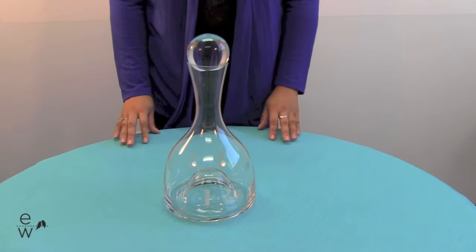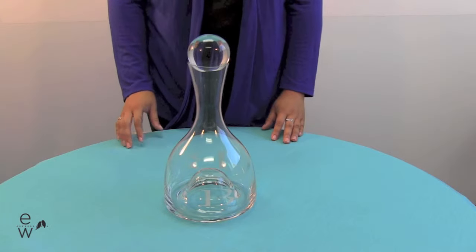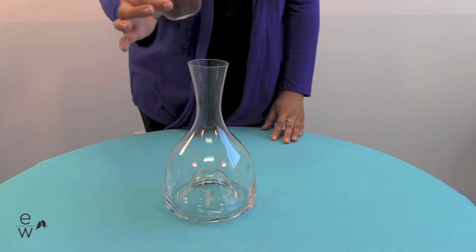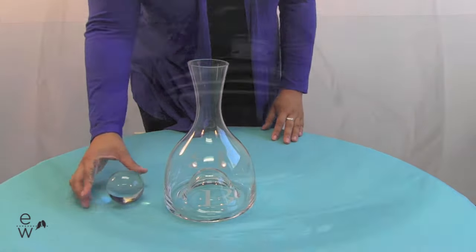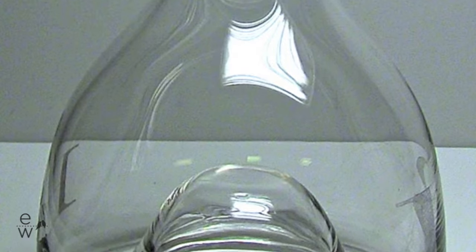The Aerating Wine Decanter is 48 ounce, environmentally friendly, lead-free crystal. A crystal ball sits atop to help keep your wine fresh and you'll also notice a bubble in the bottom that helps aerate the wine.